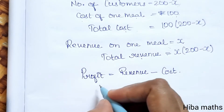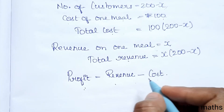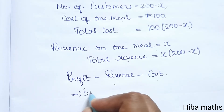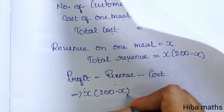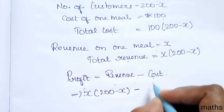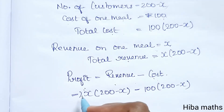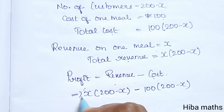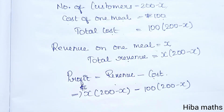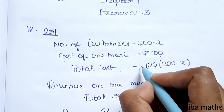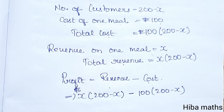Now profit means revenue minus cost. So profit equals x into (200 minus x) minus 100 into (200 minus x). Thank you so much for watching. See you next time.